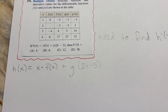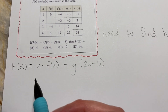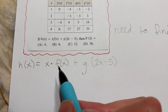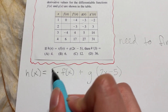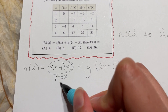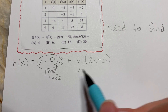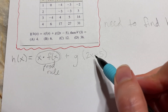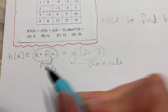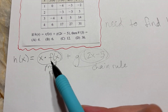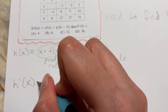We have to find the derivative, and we don't have all the details about this function — some of it's abstract — but you look at each piece and see how it's put together. The first part, x·f(x), is going to be the product rule. The second piece, g(2x - 5), has an 'of' indicating a nested function, so that's going to be the chain rule. Each of these two pieces will use a different rule.